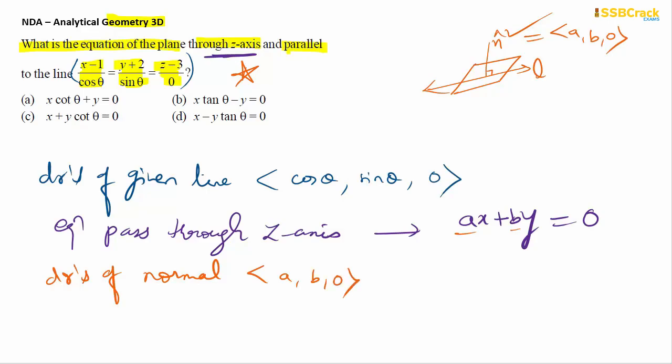Since the plane is parallel to the line, the condition to be satisfied is that the dot product of direction ratios for the normal and the given line should be zero. Hence, a cos θ + b sin θ = 0.